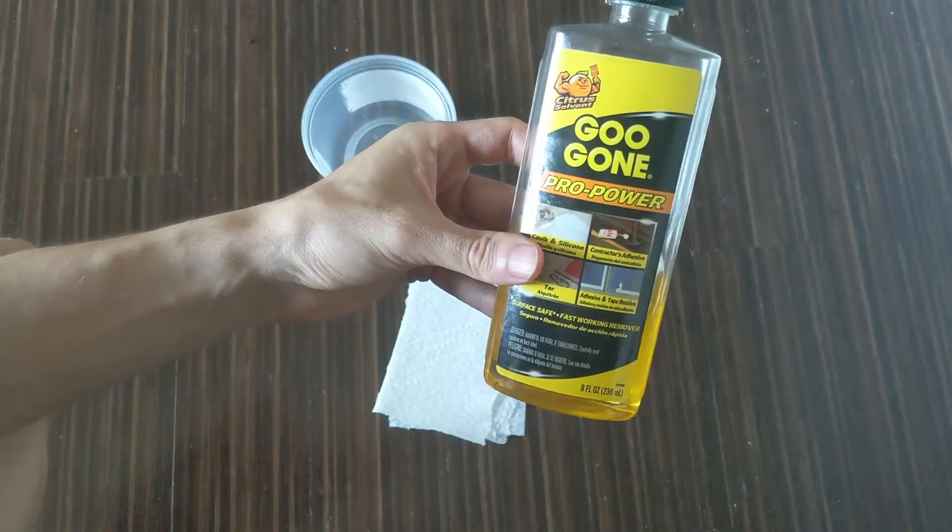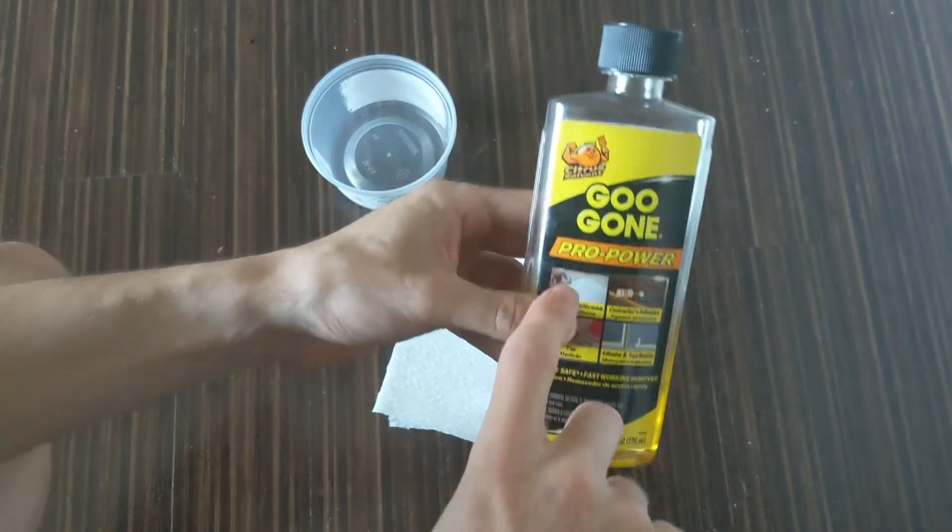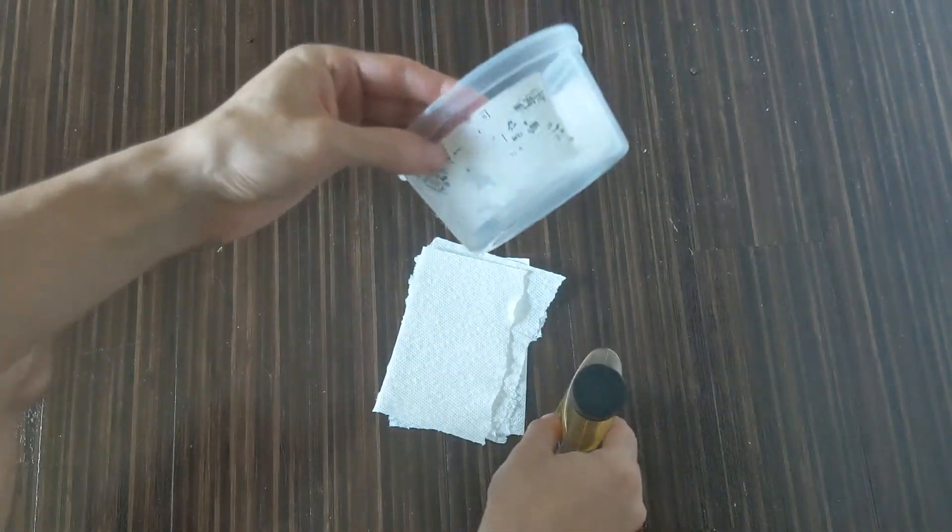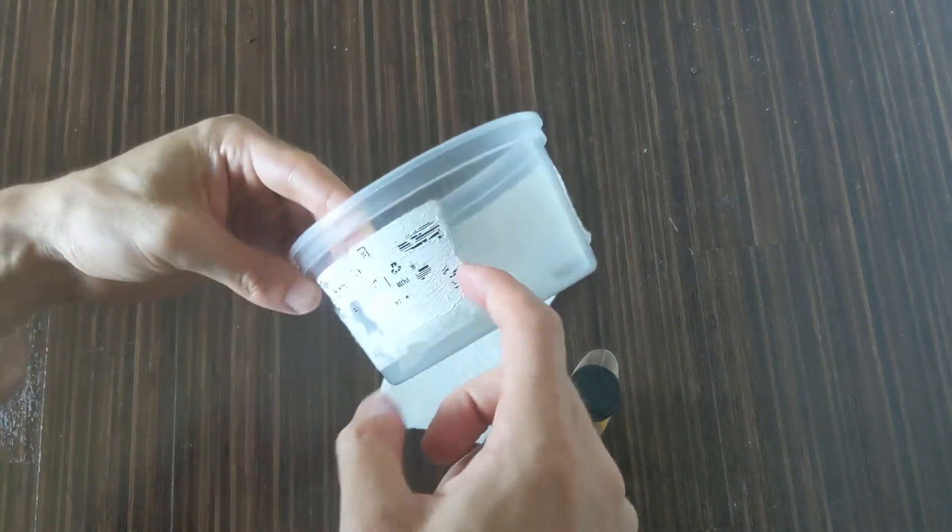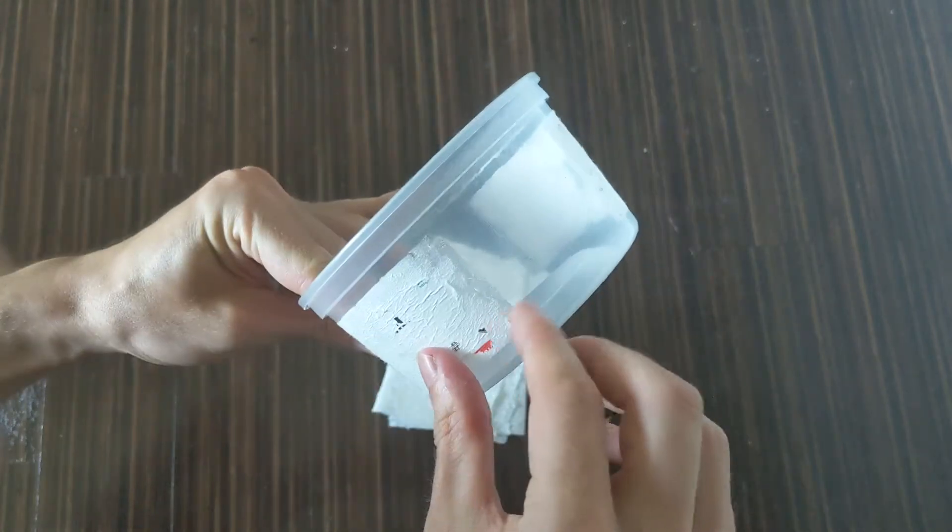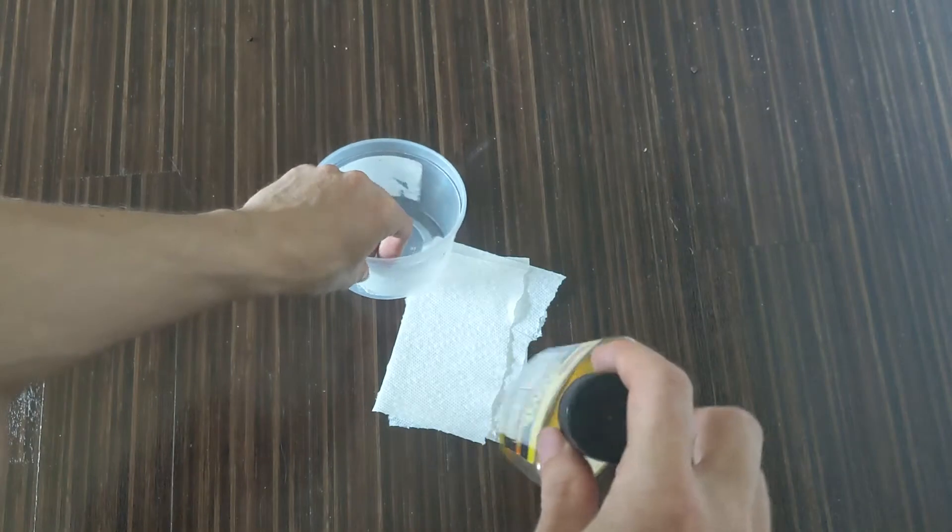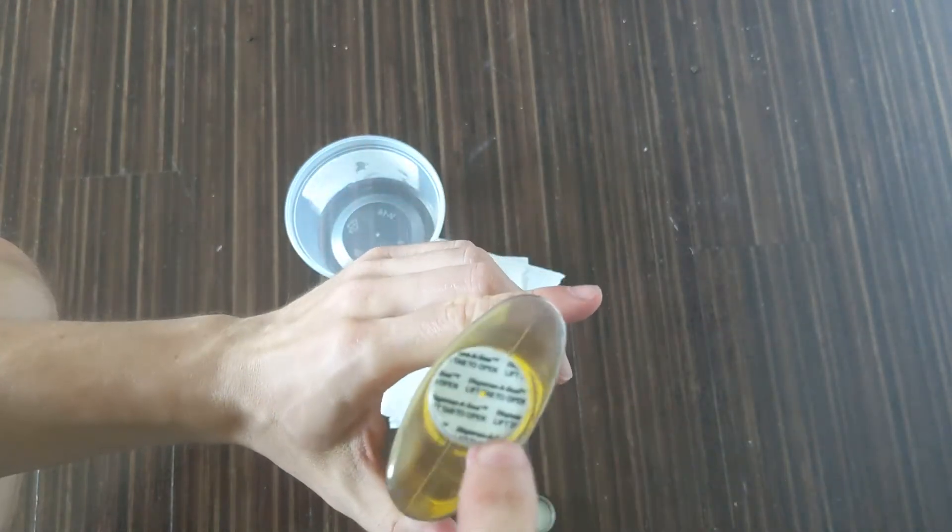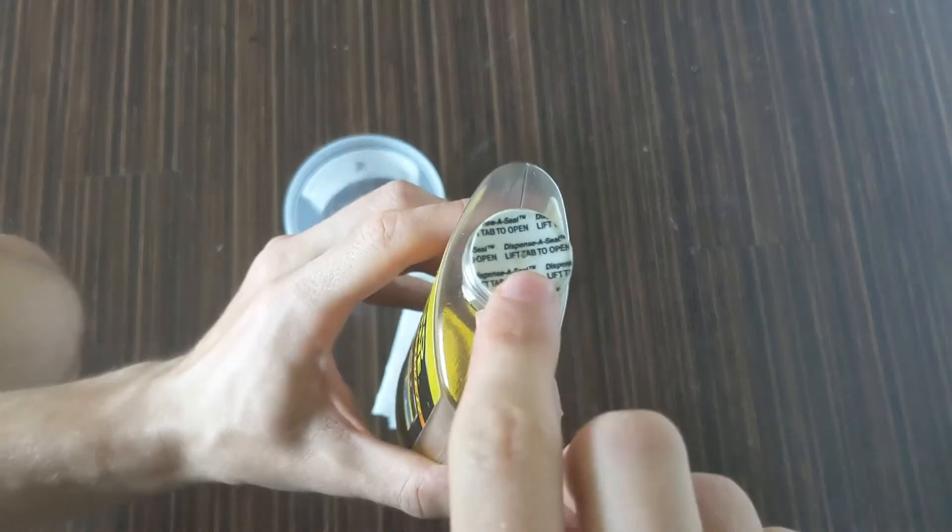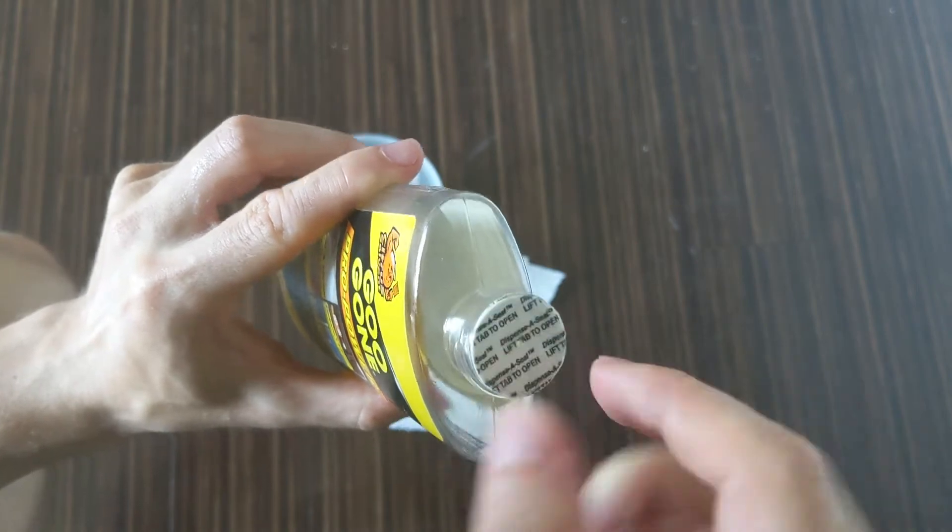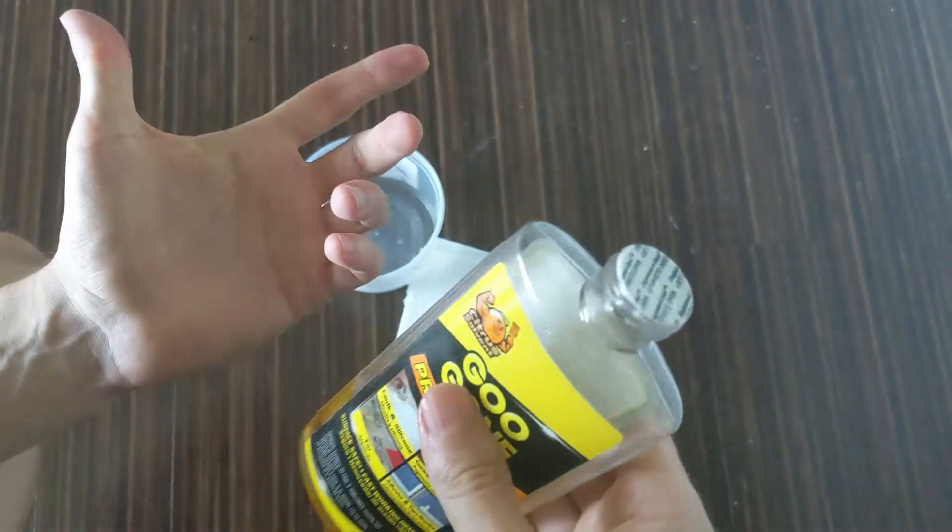This is how to use Goo Gone Pro Power to remove labels and sticky things. The first tip is instead of removing the entire top, you actually just want to poke a hole in there with like a pen, so that way it's easy to apply and it doesn't get everywhere.